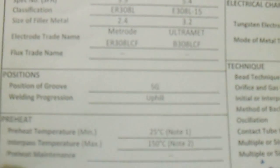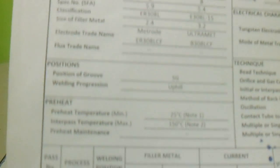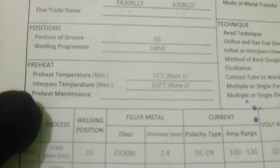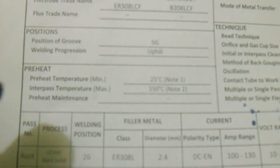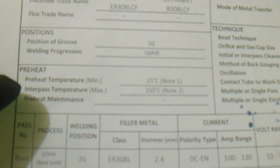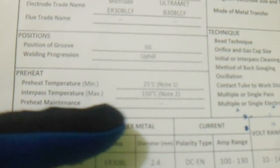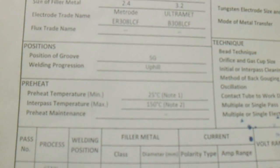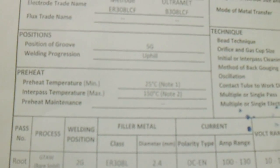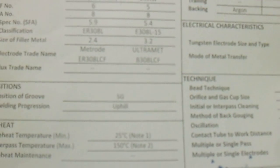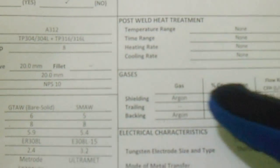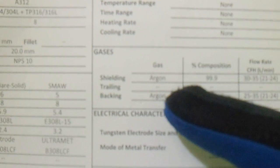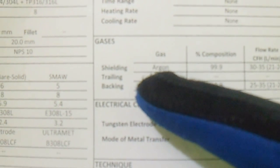Also positions — we have a position of groove 5G. Welding progression is uphill. For preheat, we have preheat temperature at 25 degrees Celsius, interpass temperature, and preheat maintenance.